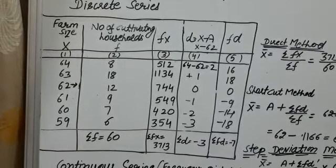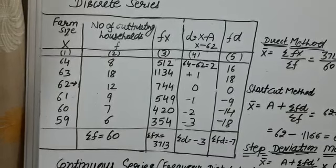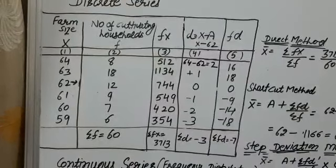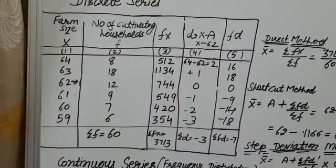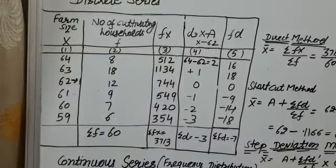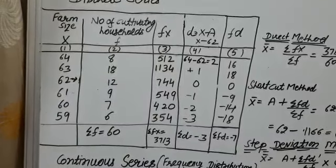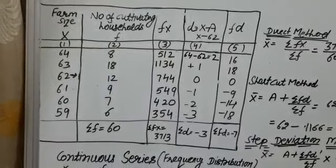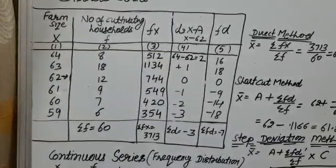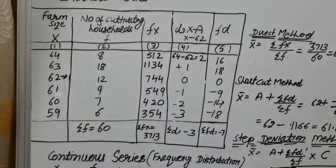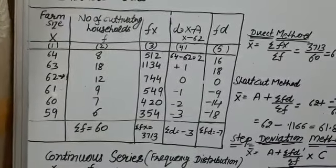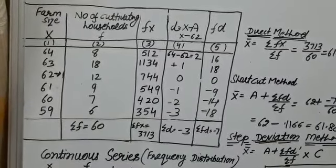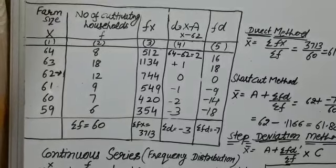Farm sizes are given as 64, 63, 62, 61, 60, and 59. Number of households cultivating these farms — this is the frequency — 8, 18, 12, 9, 7, and 6.